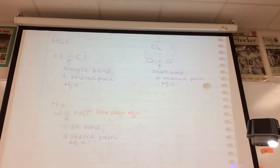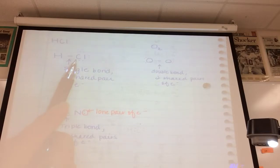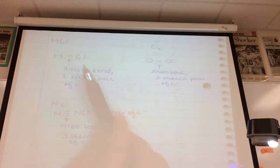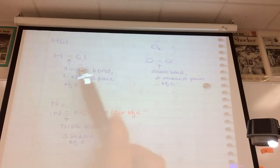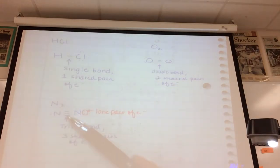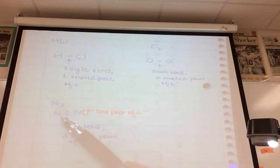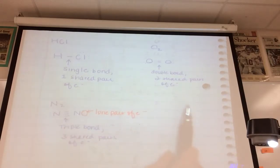The energy required to break a bond and separate the atoms is known as bond energy. Double bonds are stronger than single bonds, and triple bonds are stronger than both — quad bonds don't exist. When you build the compounds in the lab next week, you'll see that the triple bond is the strongest and also the shortest; bond length decreases as bond order increases.